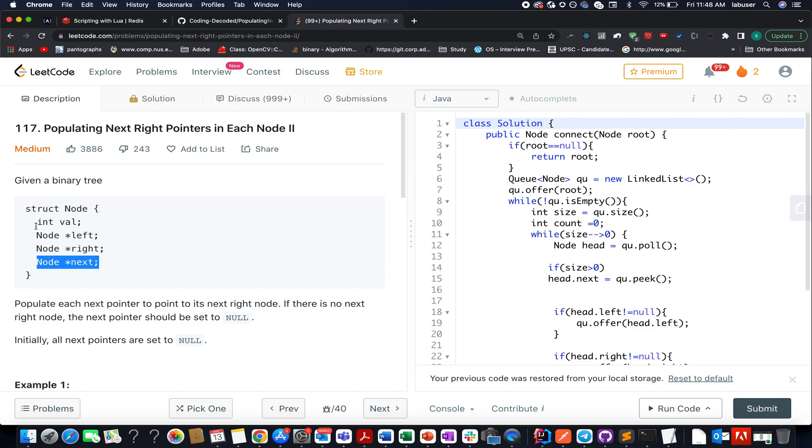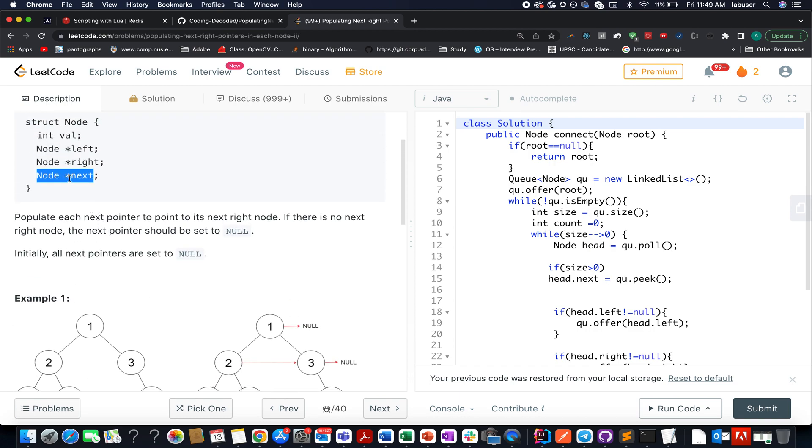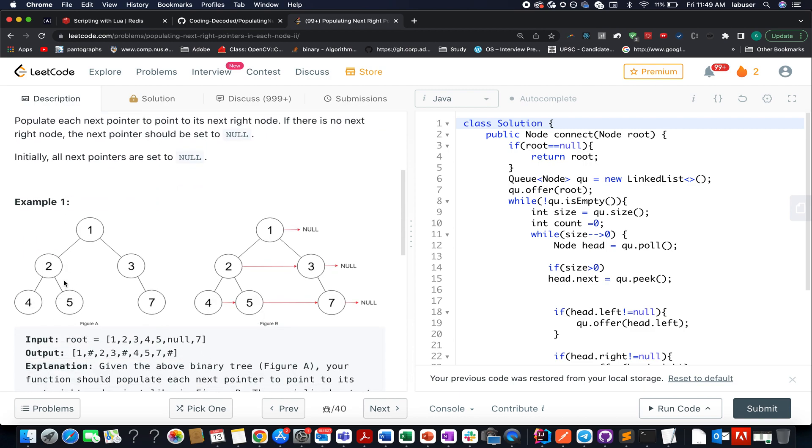And the fourth one obviously is the value, but what we need to do in this question is to set this next pointer appropriately. So let's walk through an example and get a good hold of the concept. Here you can see this is the binary tree that is given to you. All the next pointers of the nodes of this binary tree are null.